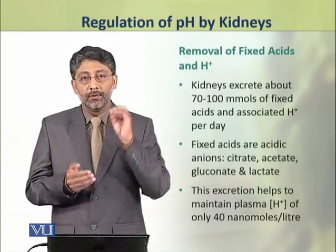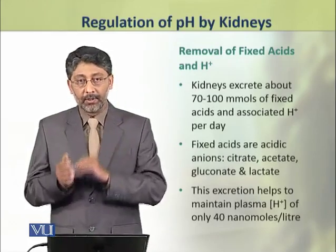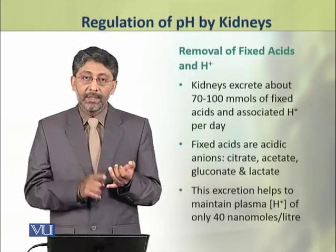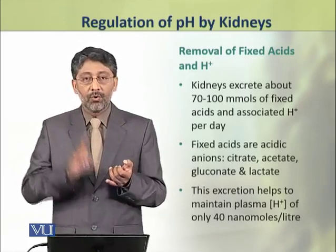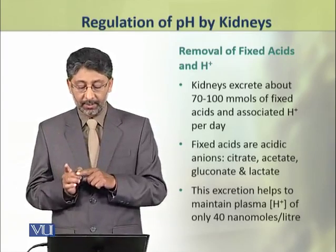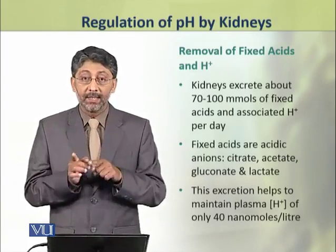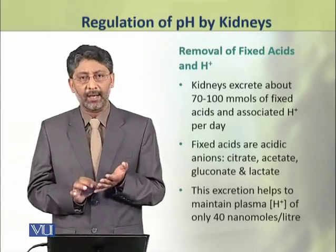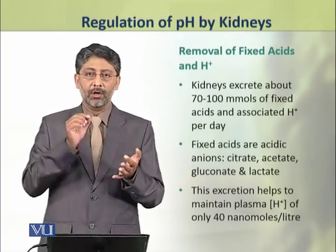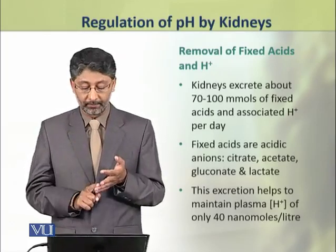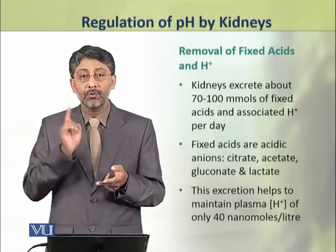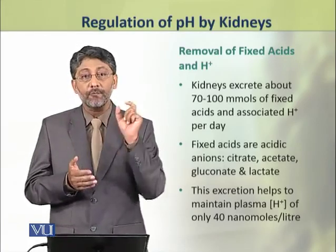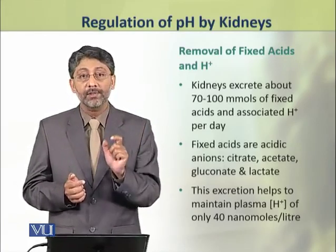Dear students, now we shall discuss the mechanism or process of removal of fixed acids and hydrogen ions. Kidneys excrete about 70 to 100 millimoles of fixed acids and associated acidic hydrogen ions per day. Fixed acids are acidic anions — that is citrate, acetate, gluconate, and lactate. This excretion helps to maintain the plasma hydrogen ion concentration of only 40 nanomoles per liter.